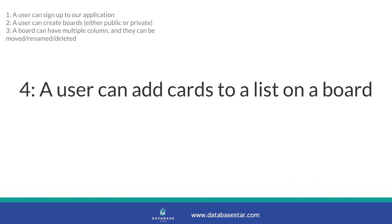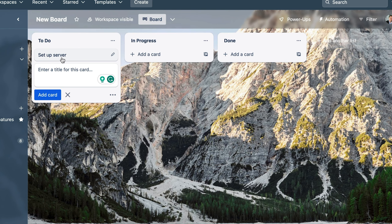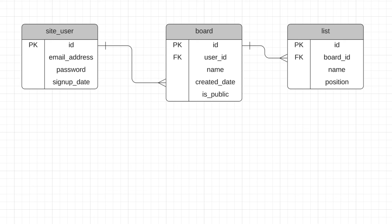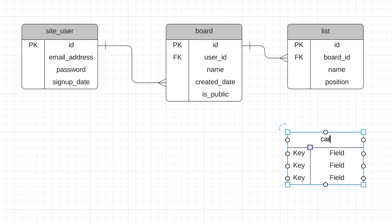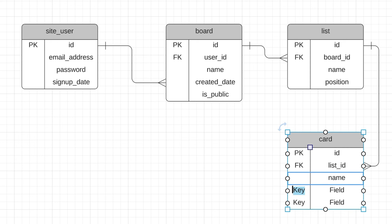Our fourth requirement is about cards. A user can add cards to a list on the board. Cards can be moved to different lists or columns, and a card can have a name and a description. We'll add a new table called card with an ID primary key column. A card belongs to a list, so we'll add a list ID as a foreign key. The card can be moved between lists but it only belongs to one list at a time. We'll add columns for the name, description, and a created date.